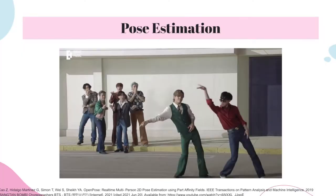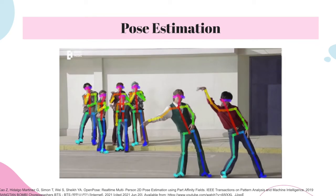The ability to distinguish key points and form skeletons from images of people is called pose estimation. Current pose estimation techniques are actually optimized for pictures of people when they're in upright positions and when the image quality is very high.